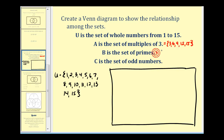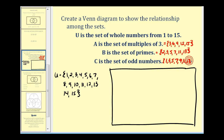Set B is the set of primes. Remember, a prime number has only two factors and must be greater than one. So we'd have two, three, five, seven, eleven, and thirteen. Set C consists of the odd numbers from this list: one, three, five, seven, nine, eleven, thirteen, and fifteen.